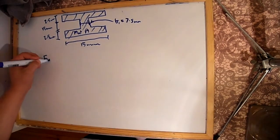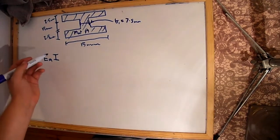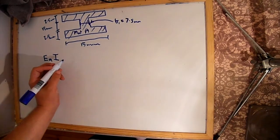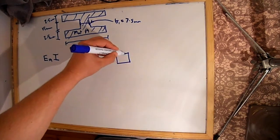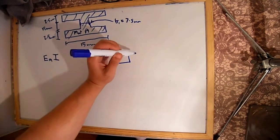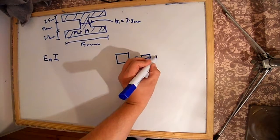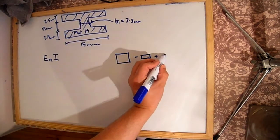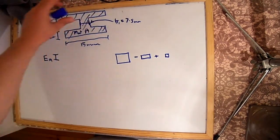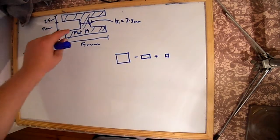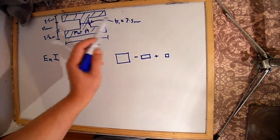For part two, we calculate the flexural stiffness E_A times I. The second moment of area is found by taking the full outer rectangle, subtracting the centre hollow section, and then adding back the centre section that actually contains material — which we now know has a base width of 7.5 mm.